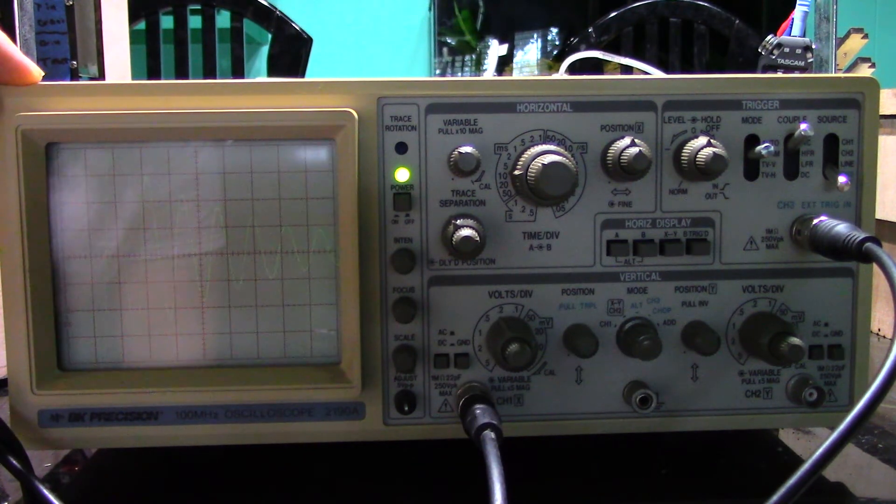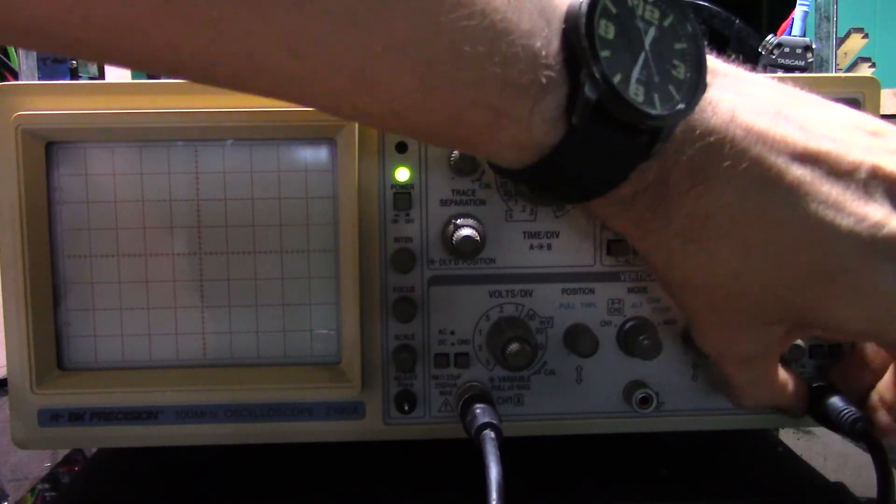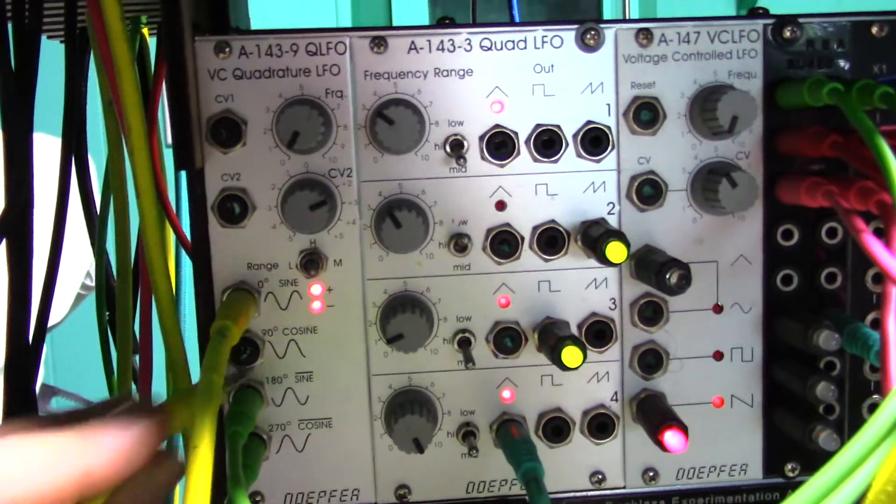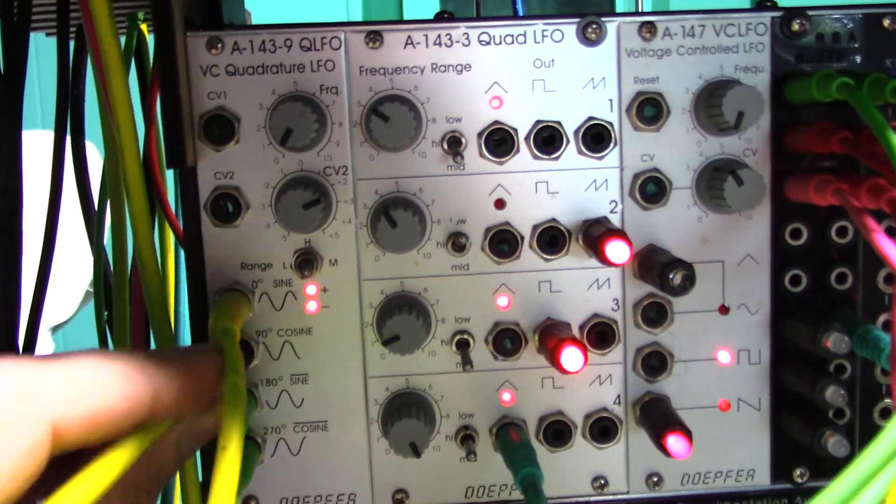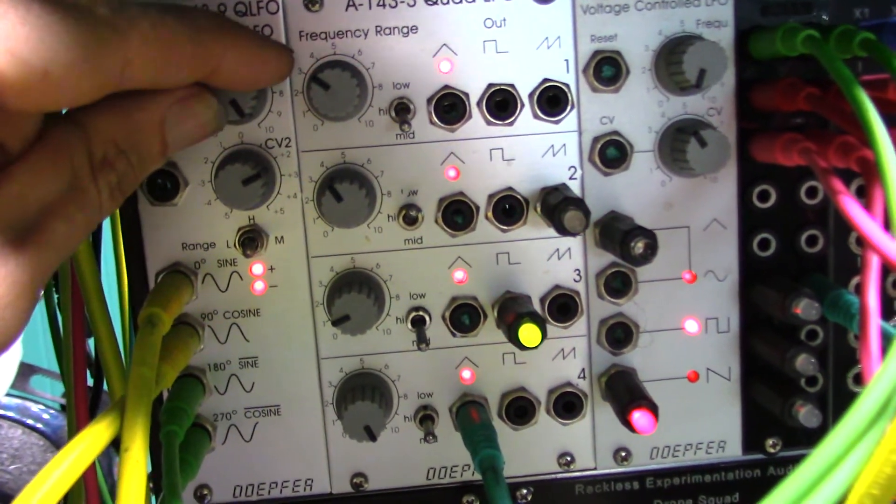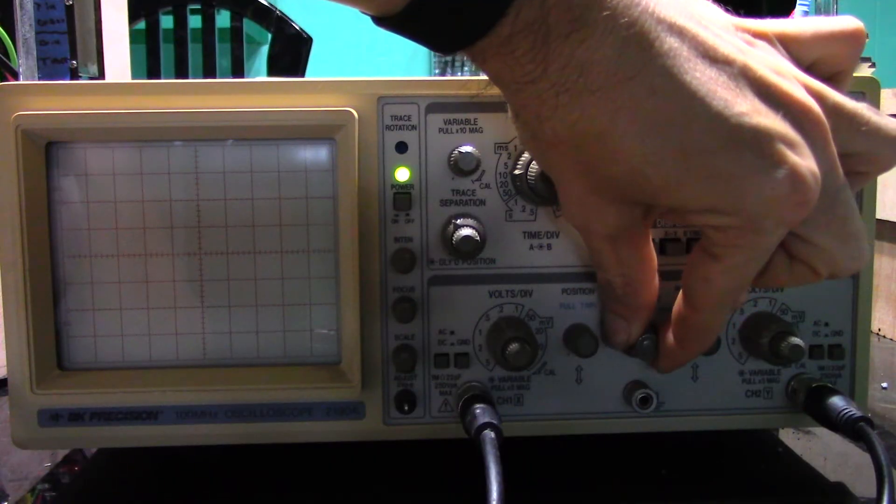Now that the basics are out of the way, let's talk about how to set up the scope to draw circles. First connect both inputs of the scope to a signal source that can produce a sine and cosine output. Turn up the speed of the signal generator to make things easier to see. Then put the scope in XY mode.